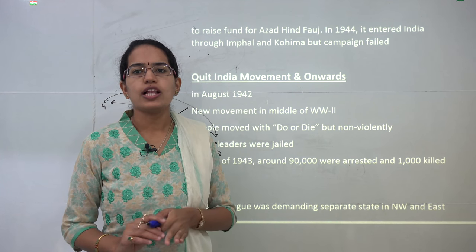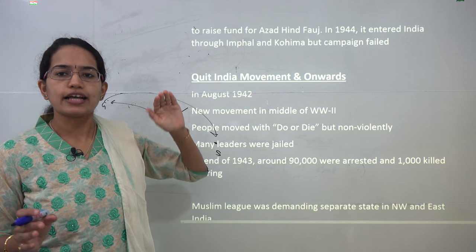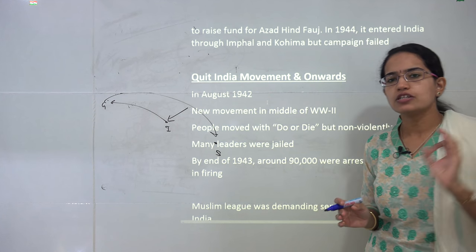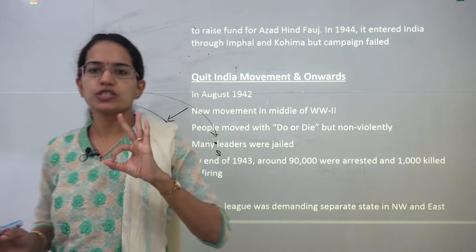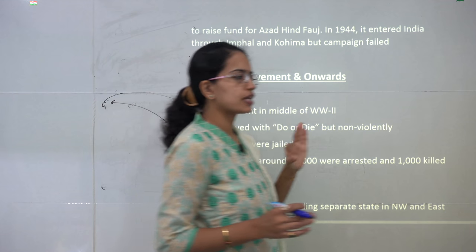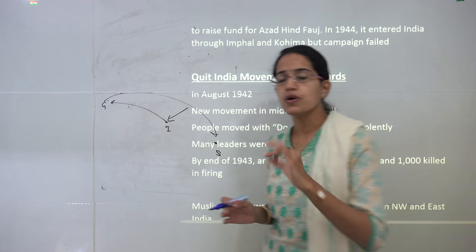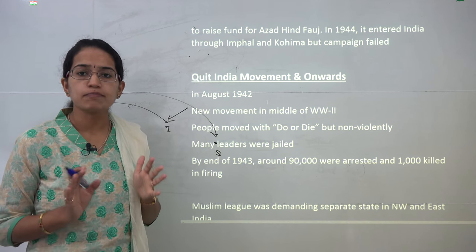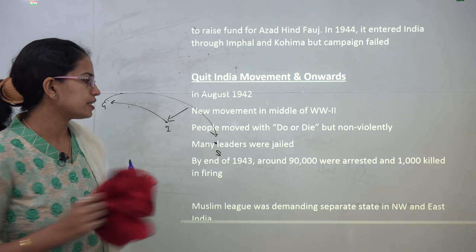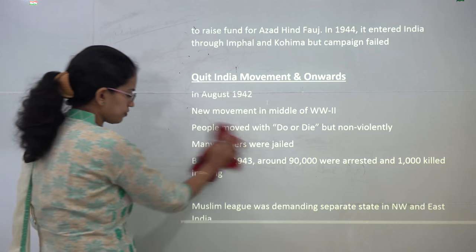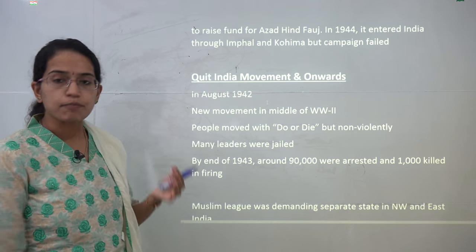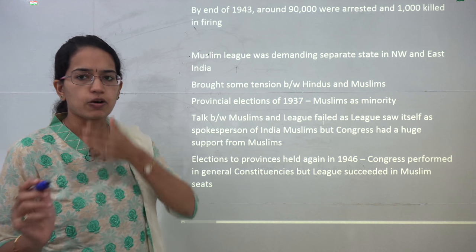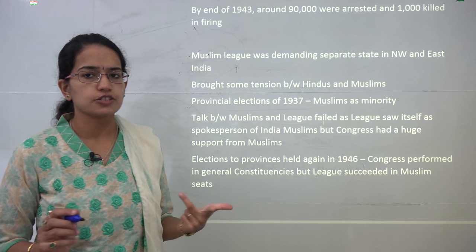1942 is called the Sankalp to Siddhi year, and the Quit India Movement was started with the resolution 'Do or Die — Karo Ya Maro.' There was a large mobilization that was non-violent, but numerous leaders were jailed, many were arrested, and many were killed in firing. Meanwhile, the Muslim League was demanding a separate state for the North West and East Bengal, and tensions between Hindus and Muslims were rising.